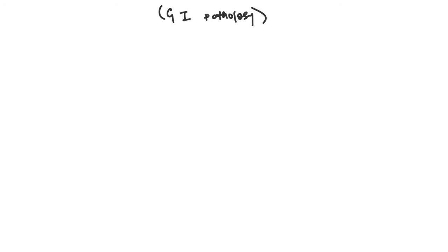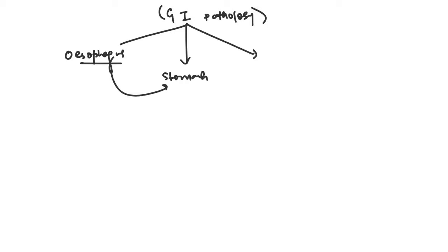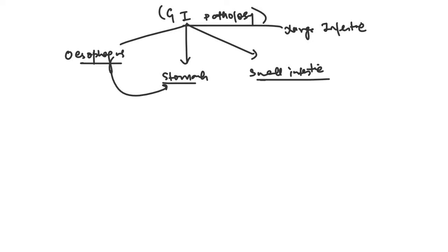Welcome to this video on gastroenterology. I'll be discussing GI pathology — gastrointestinal pathology. We'll follow a concise flowchart structure: first the esophagus, then the stomach, then the small intestine, and finally the large intestine.